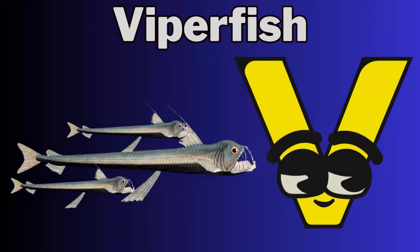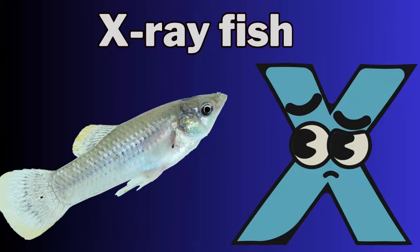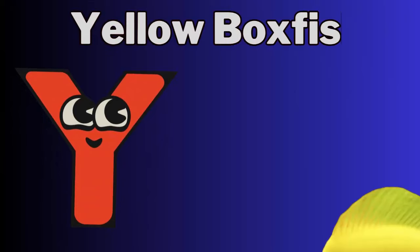U. U for unicorn fish. V. V for viperfish. W. W for walrus. X. X for X-ray fish. Y. Y for yellow boxfish. Z. Z for zebra moray.